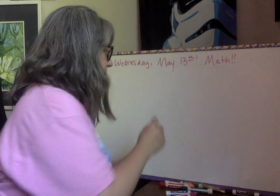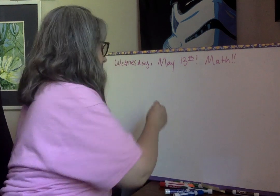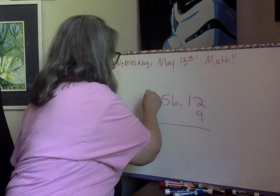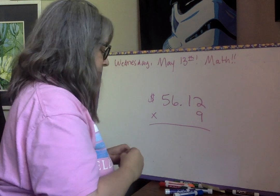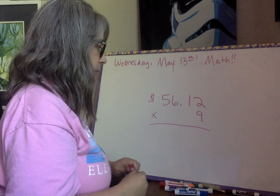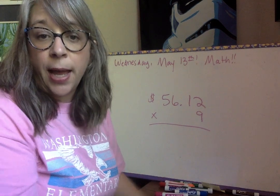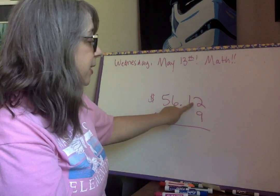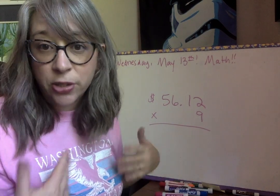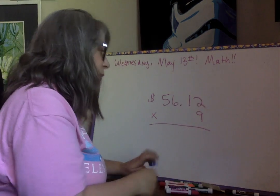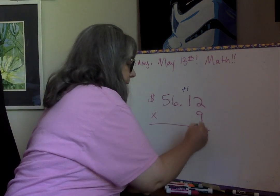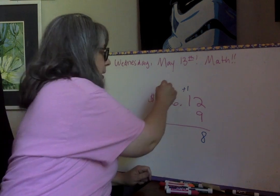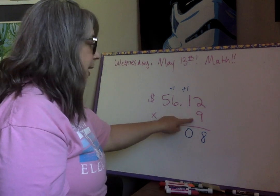All right. So we're going to say $56.12. $56.12 times nine. Now remember, when we're working with nines, you can use your fingers. Hey, there's no shame in using your fingers, people. No shame whatsoever. All right. So nine times two, but you should know nine times two, because it's just nine plus nine. So nine times two is 18. So plus one, eight down here. Nine times one plus one. So nine, ten plus one, zero down here.